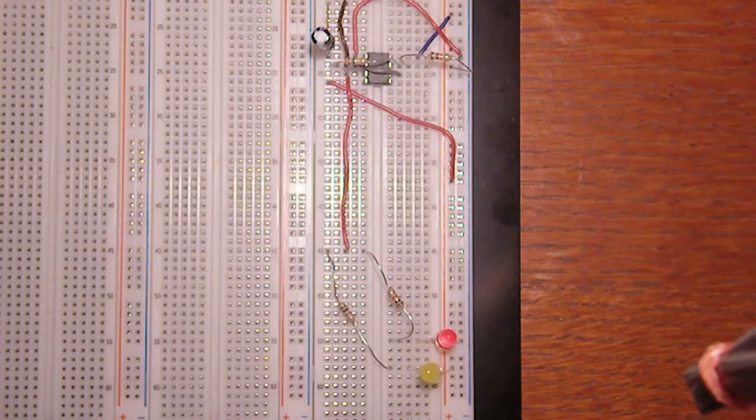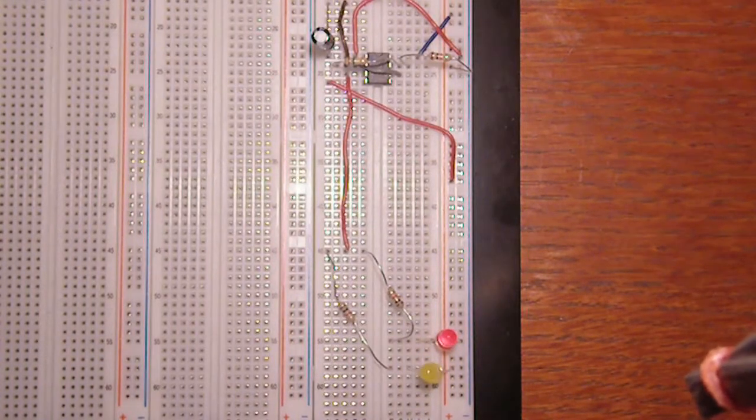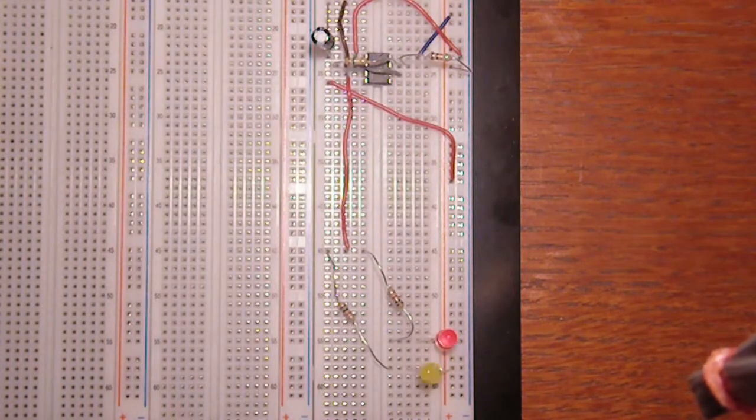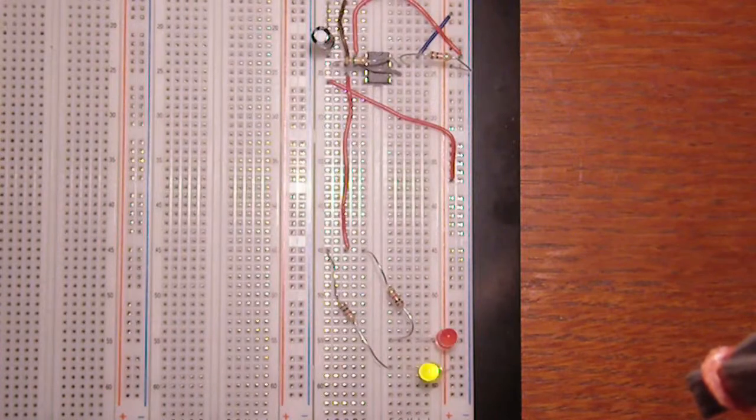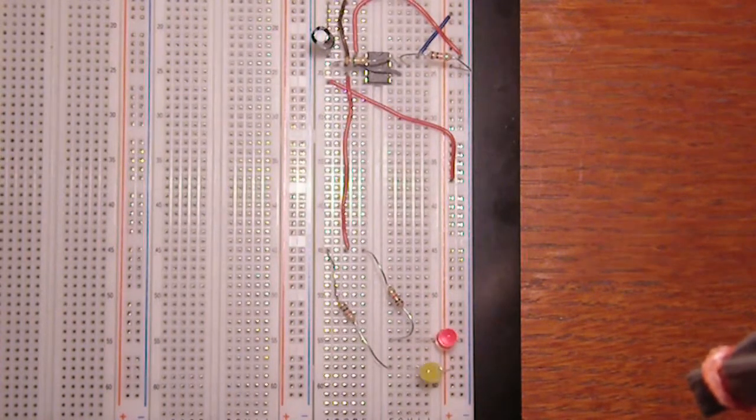This is my second 555 circuit. It's a simple LED flasher. When the yellow LED is on, the red turns off, and vice versa. I'll give a brief explanation of how the circuit works.